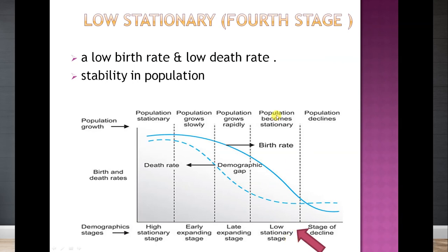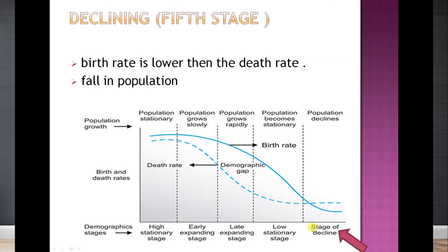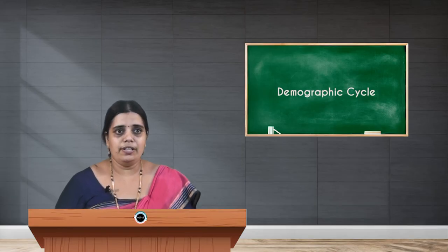The fourth stage is the low stationary stage. Here again, the population becomes stationary — there is a low birth rate and a low death rate, and stability of population is achieved. The last stage is the declining phase, where the birth rate falls lower than the death rate, meaning there is a fall in population.